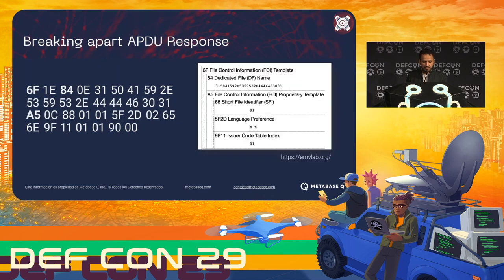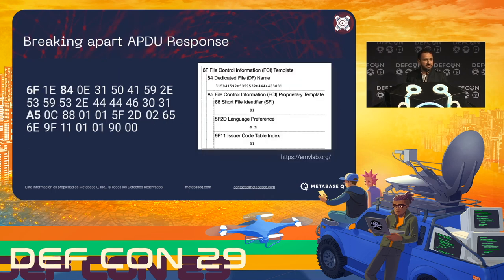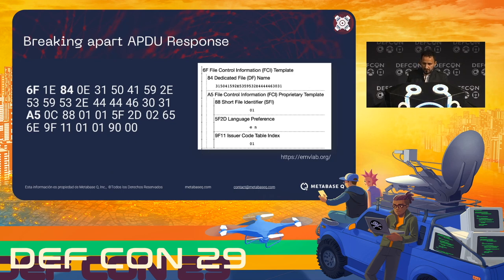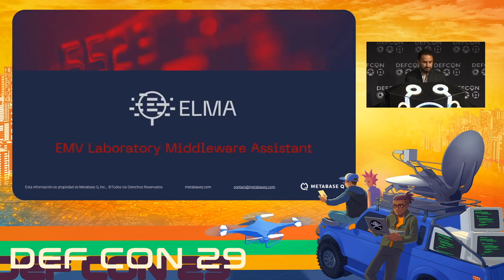How can we decode this data? As mentioned, we can use a TLV decoding method, or automatic decoders like EMV Lab, where you can decode this data and see what is inside. But one of the most important parts is how we can analyze this data automatically, because if we do it by hand it's going to be much more complicated. That's why we designed ELMA — EMV Laboratory Mirror Assistant — which assists you in analyzing this EMV communication process.